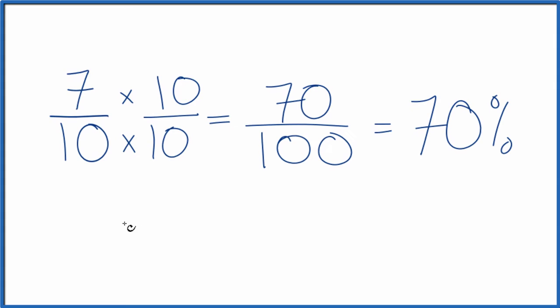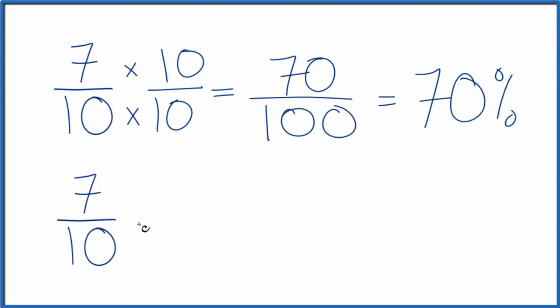The next way is you could take 7 tenths and on your calculator, divide 7 by 10. That'll give you 0.7. Then you just multiply that by 100 and you have your percent, 70%. So that's the other way you can do it.